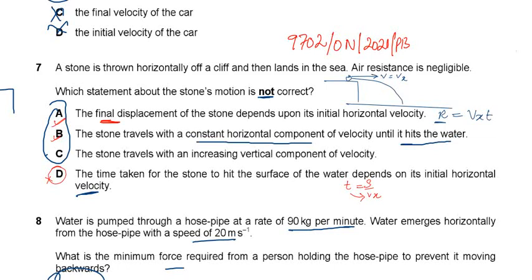Option B: the stone travels with a constant horizontal component of velocity until it hits the water. Throughout the journey in projectile motion, the horizontal component is always constant. So this is very true.